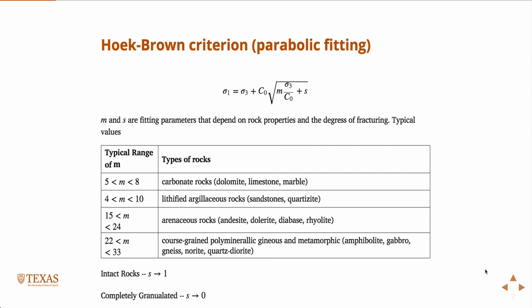It's really just fitting those circles, and those circles are dependent upon the maximum and minimum principal stresses — sigma 1 and sigma 3. So the model is still just a function of sigma 1 and sigma 3, just like the Mohr-Coulomb model. It's just that now you need a few more parameters to fit. C0 is still the unconfined compressive strength, but then you have these new fitting parameters, M and S. They depend on the rock properties and the degree of fracturing. Here are the typical values for different types of rocks for values of M. S is a parameter that goes from 0 to 1, where 1 would be a completely homogeneous intact rock, and 0 would be a completely granulated rock — like a sand — varying in between depending upon the number of faults and fractures and how intact the rock is.